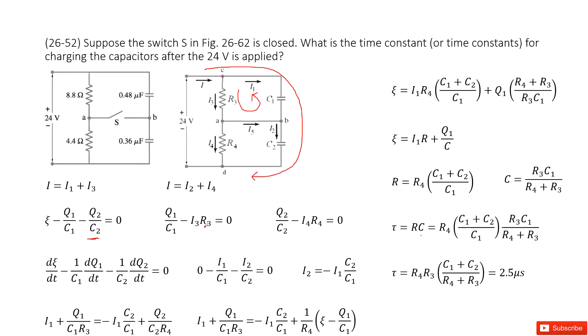So minus I3 times R3 and then plus the voltage goes through capacitor Q1 divided by C1. This part we can draw, looks like this one. The second Kirchhoff's loop: minus I4 times R4 plus Q2 divided by C2 equals zero.